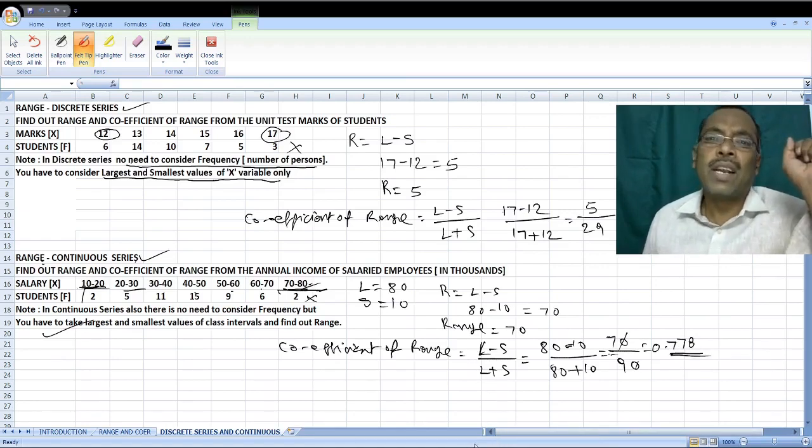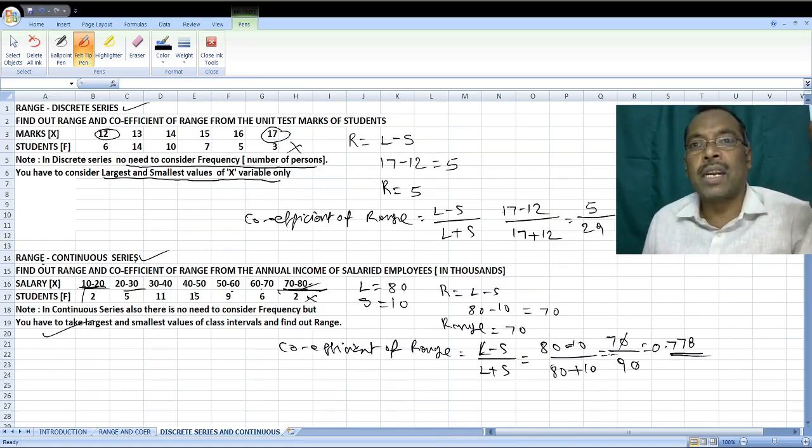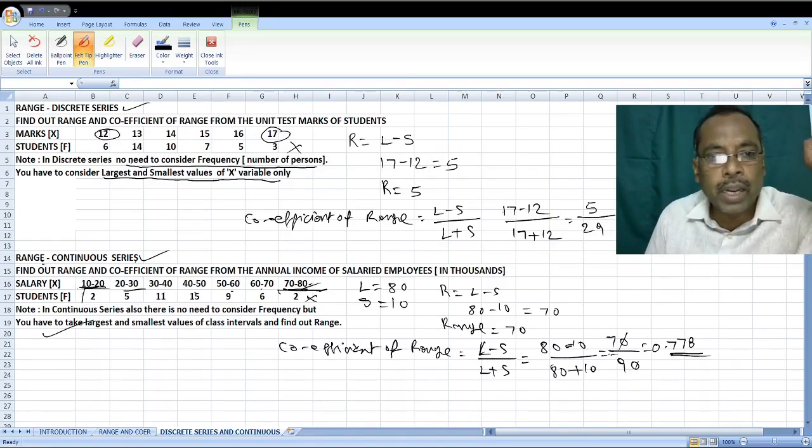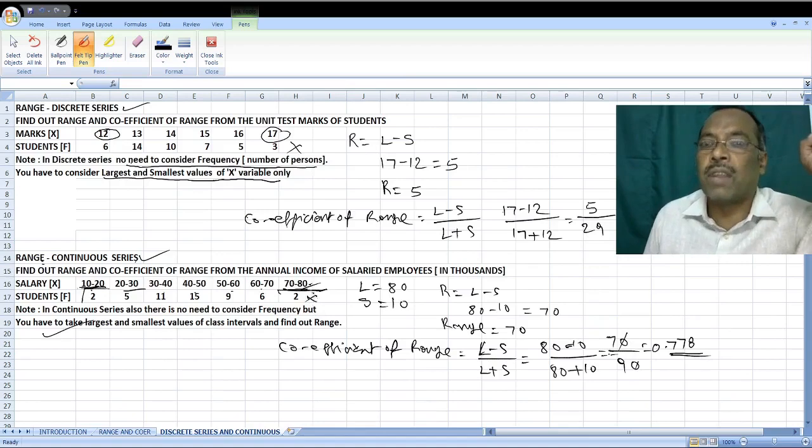That's all, my dear students. It's very easy for you to understand and practice problems in range: individual series, discrete series and continuous series. There is no difference. The only thing in continuous series is you are going to take lower value in first class interval and upper value in last class interval. Thank you for watching this video and we shall meet again with quartile deviation in the next video. Have a nice time. Thank you so much.